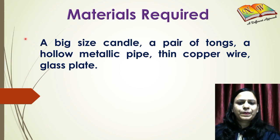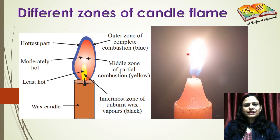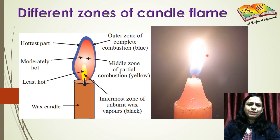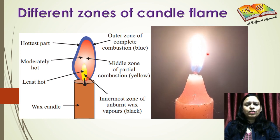A candle flame has three different zones. The outermost zone is the zone of complete combustion, which is blue in color. You can see this in the actual image of a candle flame — though it is not very clearly visible here, if you light a candle you will clearly be able to see this blue colored part on the outermost side. This is the hottest part of the flame.